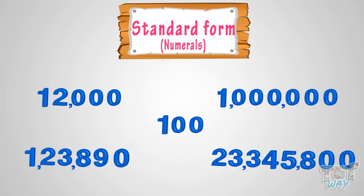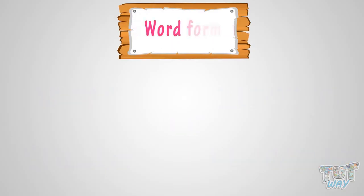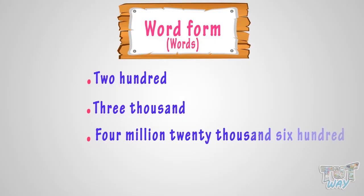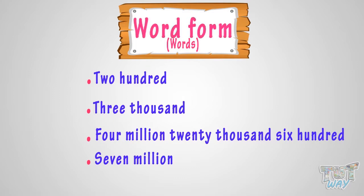The second way is the word form, where we write the numbers in words. Here are a few numbers written in word form: two hundred, three thousand, four million, twenty thousand, six hundred, six million, seven million. These are written in word form.